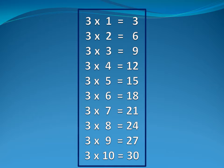Three six is eighteen. Three seven is twenty-one. Three eight is twenty-four. Three nine is twenty-seven. Three ten is thirty.